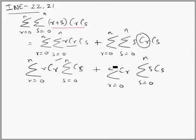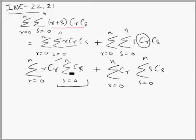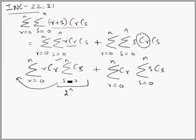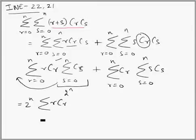We know the summation of Cs for all values of s from 0 to n is 2^n. So we write this as 2^n and shift 2^n out of the second sigma because it is independent of r. The second sigma is over r and there is no r term, so we sum it and shift it out, giving 2^n · sigma of r·Cr (r varies from 0 to n).